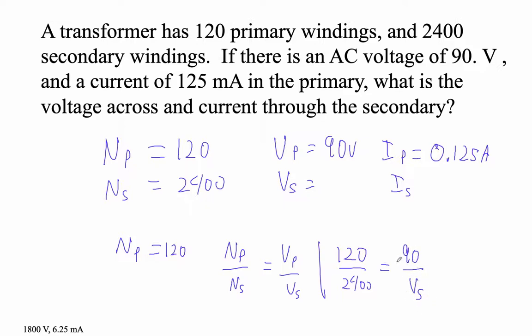So we're going to go 90 times 2400 divided by 120. And the secondary is 1800. I love these problems, man. So the voltage in the secondary is 1800 volts.